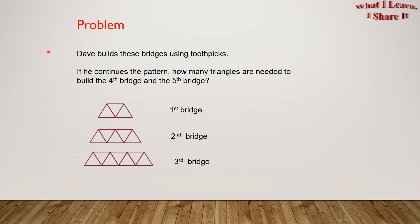Let's use this problem to help us understand the strategy. Dave builds these bridges using toothpicks. If he continues the pattern, how many triangles are needed to build the 4th bridge and the 5th bridge?